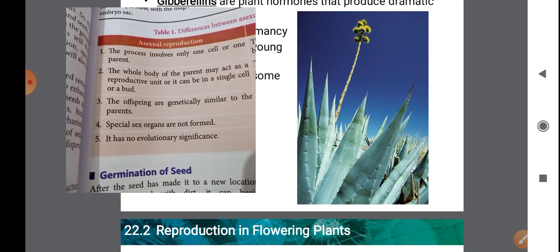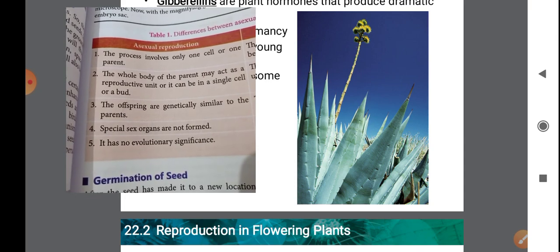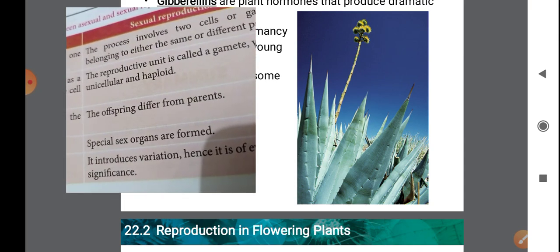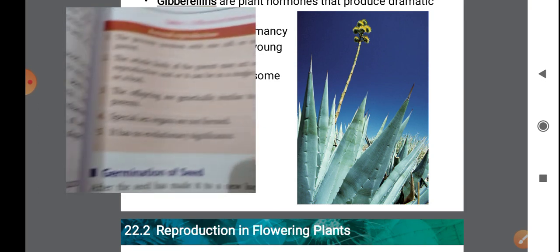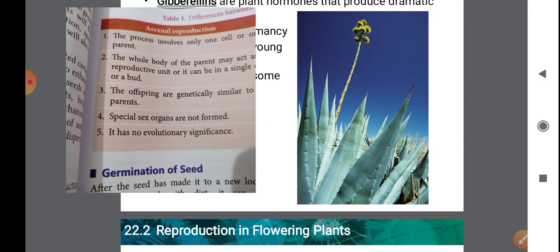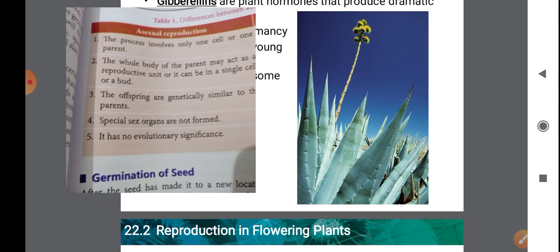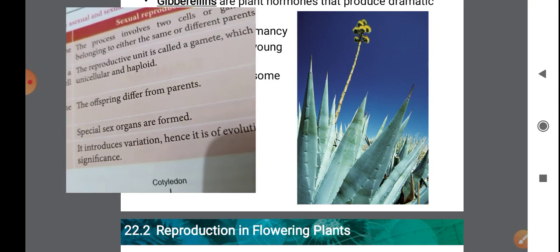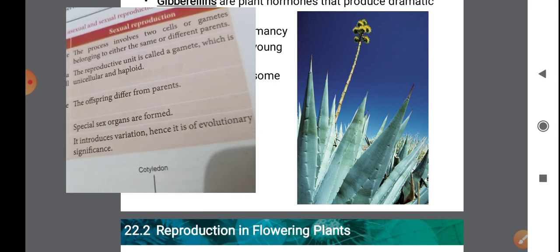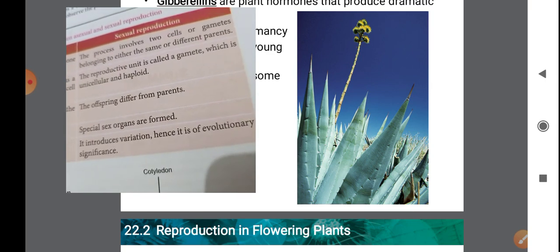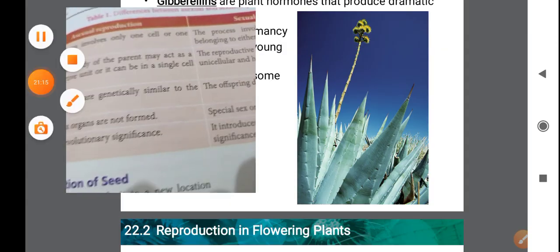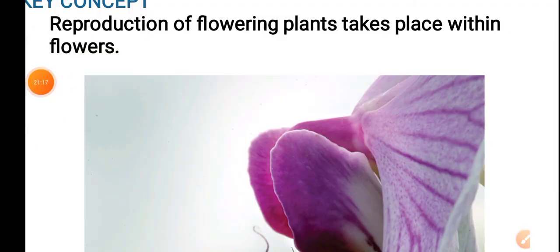In asexual reproduction, special sex organs are not formed, and it has no evolutionary significance. Sexual reproduction may introduce variation and hence has evolutionary significance.